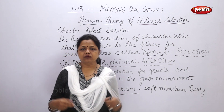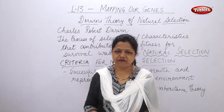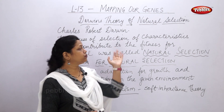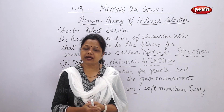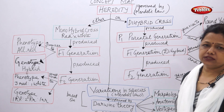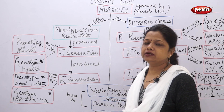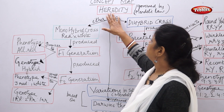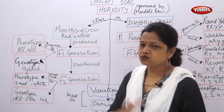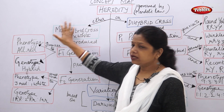This brings us to the end of this chapter, 'Mapping Our Genes.' We have come to know all the genetic factors responsible for inheritance, what evolution is, and what natural selection is. Now we will look at the concept map of this chapter. A concept map gives us an at-a-glance understanding of everything studied. We studied what heredity is, which is governed by Mendel's law — that hereditary characters are passed from parents to offspring.